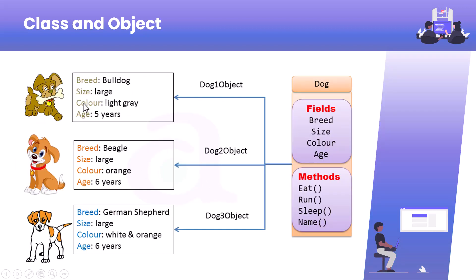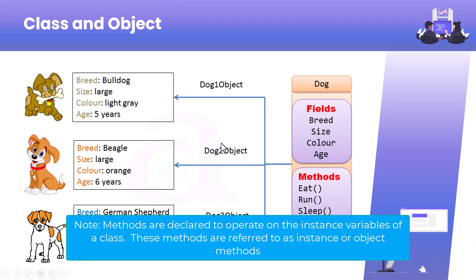Based on the data member variables, the breed of one particular dog can be Bulldog, size large, color light gray, and age five years. For each object these member variables can change. For a third object, the breed could be German Shepherd, size large, color white and orange, and a different age. It can also have methods like eat, run, and sleep.